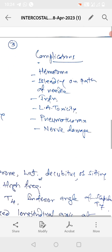What are the complications? Complications of intercostal nerve block are hematoma, bleeding on the path of needle, infection, local anesthesia systemic toxicity, pneumothorax and nerve damage.